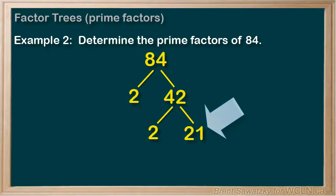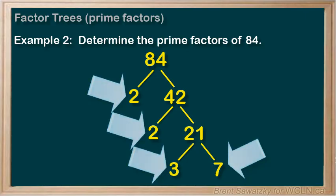Thinking back to our times tables, we think, well, 3 times 7 is 21, so our branches become 3 and 7. And we note that 3 and 7 are both prime numbers. So we're at the end of our factor tree. The prime factors of 84 are 2, 2, 3, and 7.